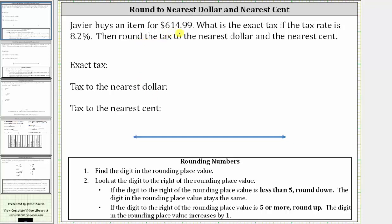Javier buys an item for $614.99. What is the exact tax if the tax rate is 8.2%? Then round the tax to the nearest dollar and the nearest cent.